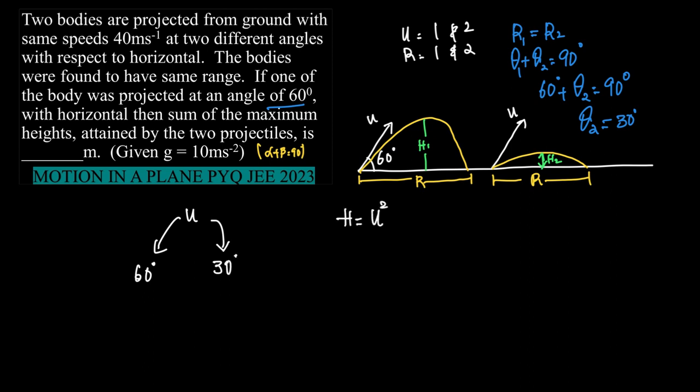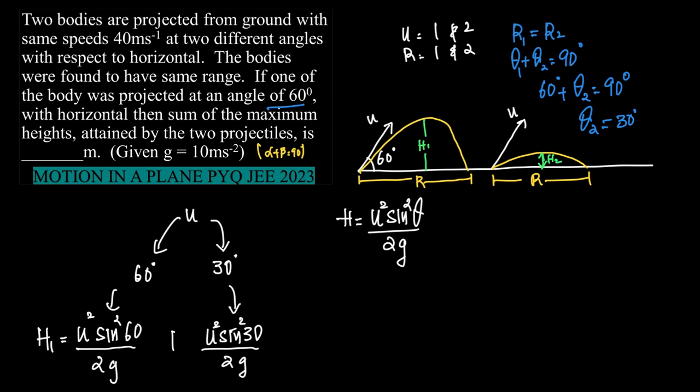And in both cases what's the maximum height attained? Height is u square sine square theta the whole upon 2g. So here it would be u square sine square 60 the whole upon 2g, and in case of 30 degree it would be u square sine square theta the whole upon 2g. So let us say h1 is equal to u square sine square 60